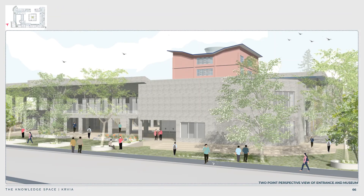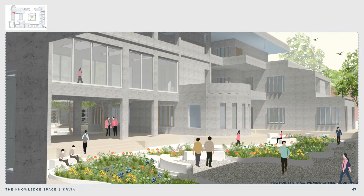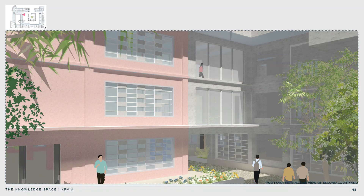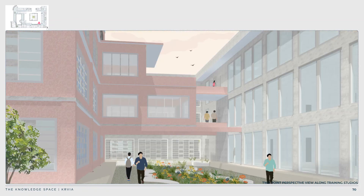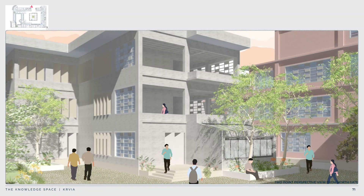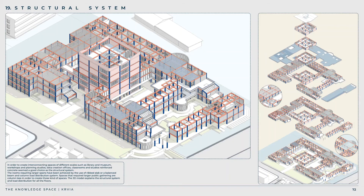This is an aerial view of the building looking towards the southeast direction. This is a view of the entrance to the museum. This is the view of the first courtyard, where you can see the laboratory, the meeting room, and the participatory mapping room. This is the view of the second courtyard between the laboratory and the library block. This is a view along the Survey of India block, and this is a view showing the training institute and its studios.